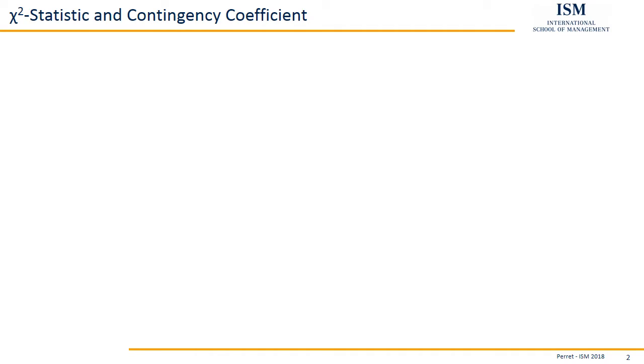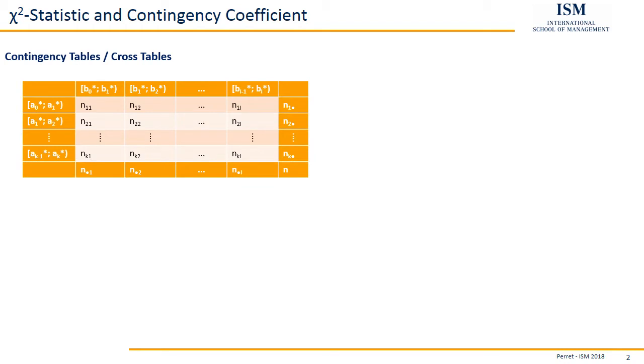Let's first start with a slightly different topic with so-called contingency or cross tables. That's tables which look like this. So we have basically two variables. One variable has all the different characteristics listed in the rows and the other one in the columns. So we have a variable A and variable B.